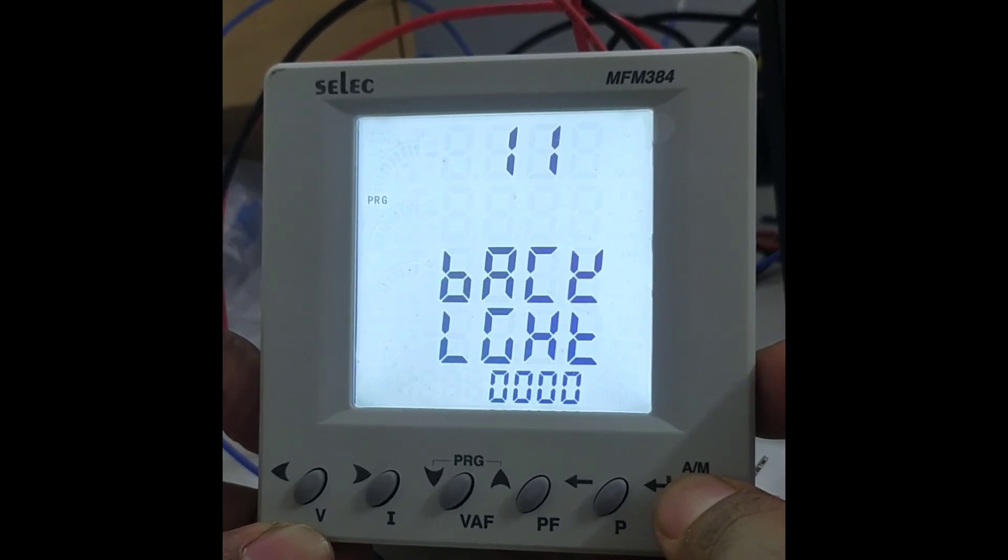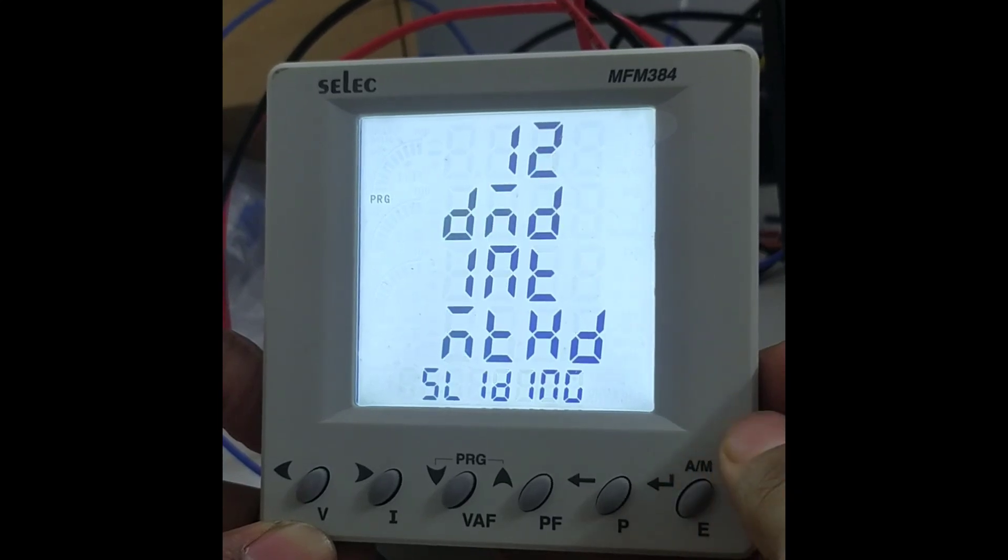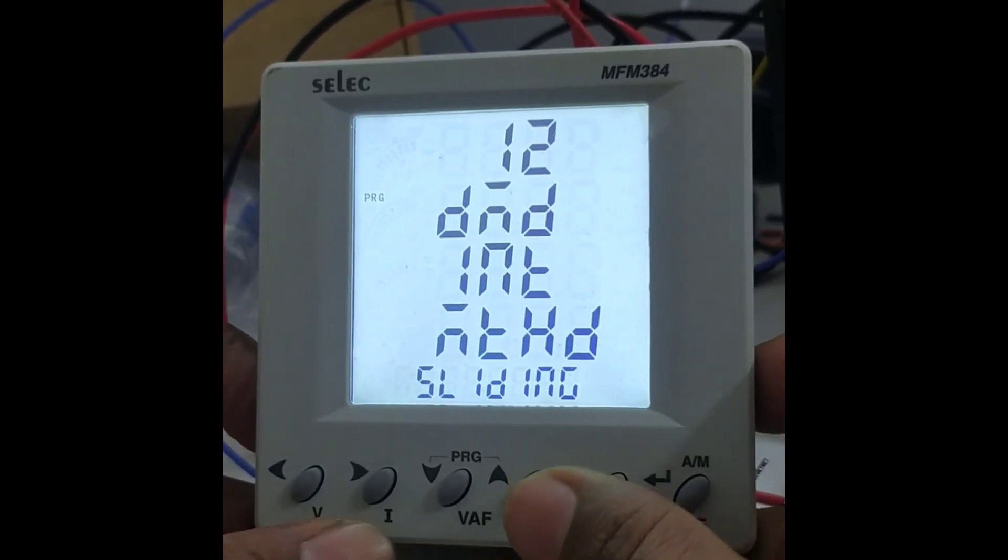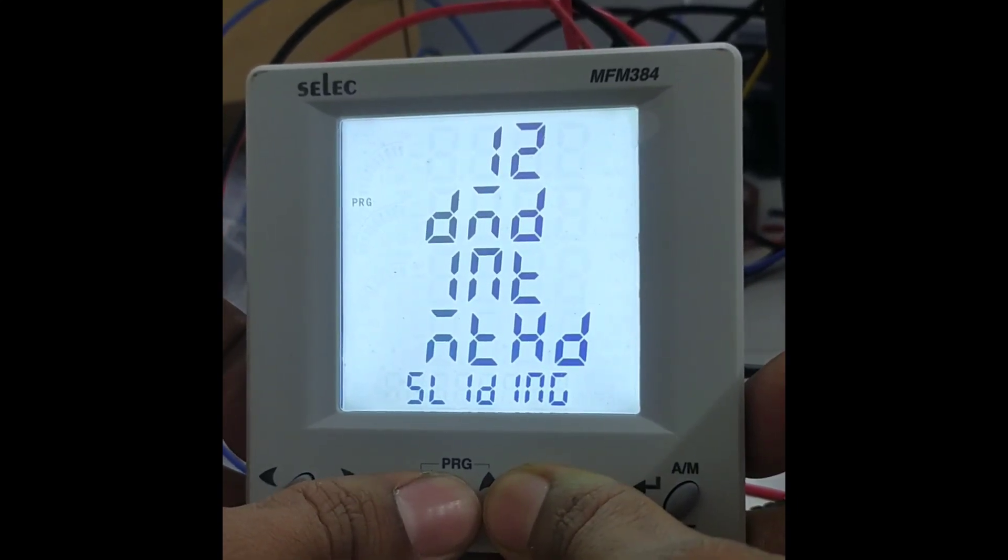Now all the communication parameters with the PLC have been checked. Now again press the upward and downward key to come out from the setting menu.